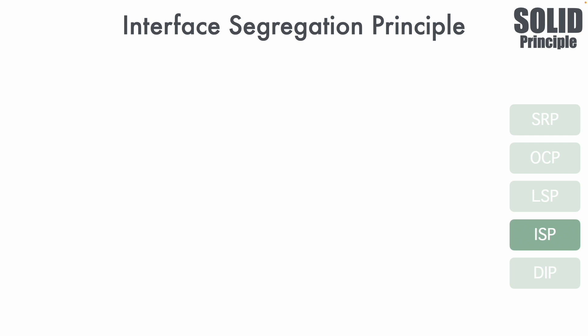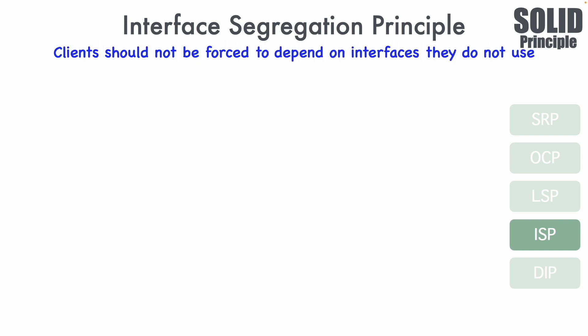What do we mean by Interface Segregation Principle? Let's look at the official definition: clients should not be forced to depend on interfaces they do not use. There are some important keywords here — interfaces, clients, and what does it mean to depend on something — and it is very important that we understand these keywords before trying to understand the definition itself.